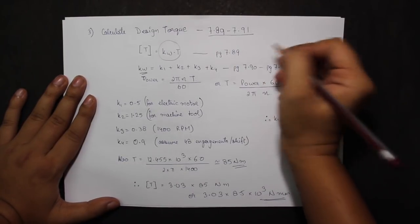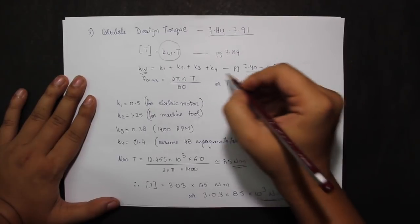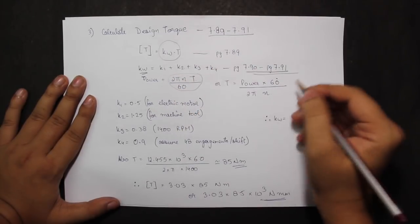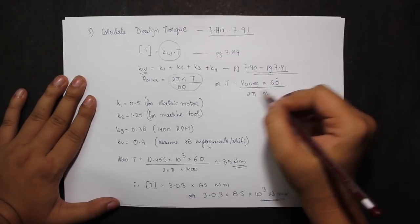Power as I know is 2 pi NT divided by 60, or torque is power into 60 divided by 2 pi N.